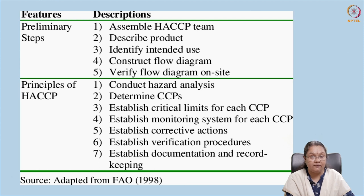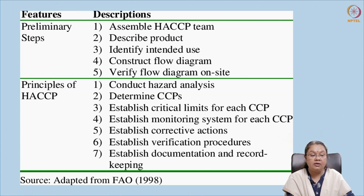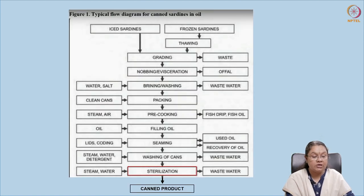For example, if it is a canned product — say canned sardine in oil — the product has to be described. What is it: canned sardine in vegetable oil? Are you going to eat it directly or modify it further? The intended use needs to be mentioned, and then a flow chart is constructed giving the exact steps for canning the product.